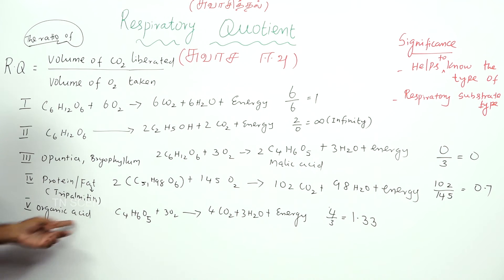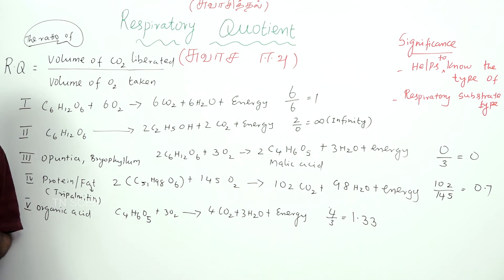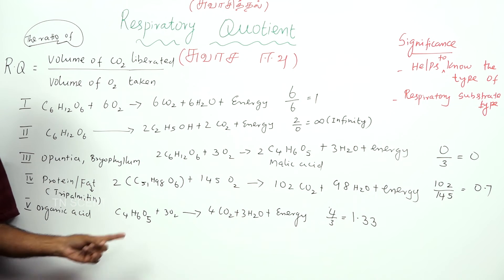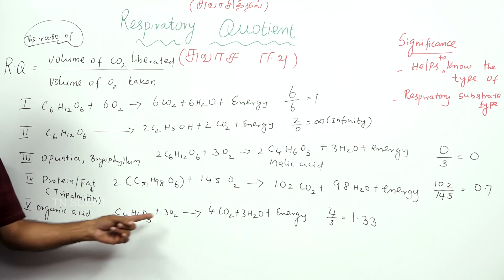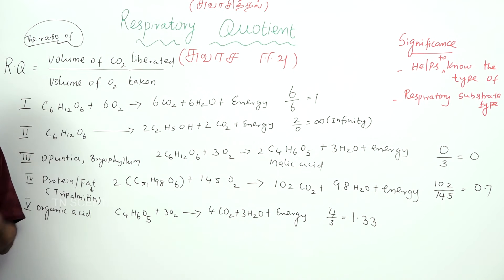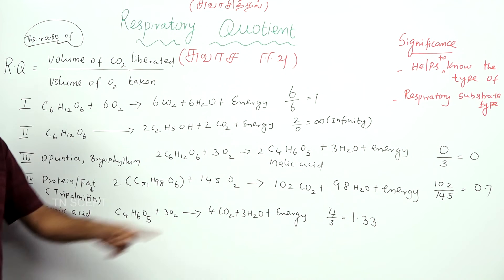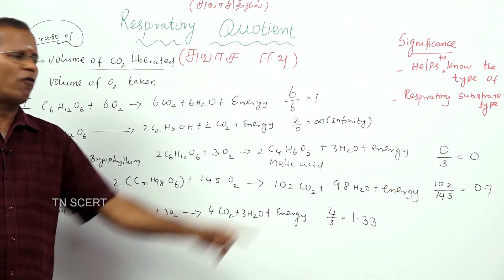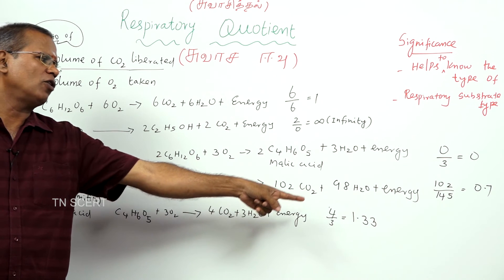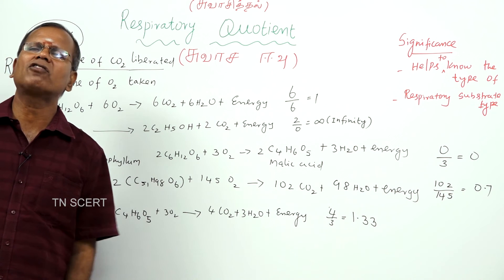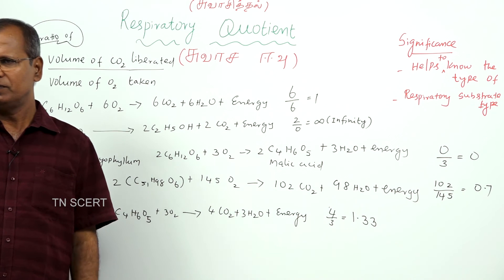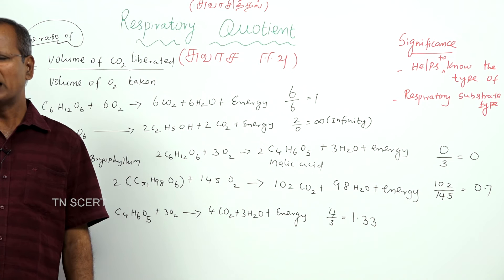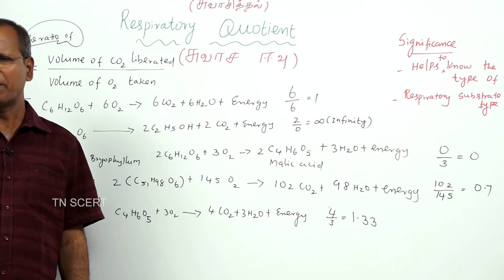Next, the organic acid — malic acid. When malic acid is the respiratory substrate, 3 oxygen molecules are taken and 4 carbon dioxide molecules are evolved. So, 4 by 3 is equal to 1.33. The respiratory quotient of malic acid (organic acid) is 1.33.